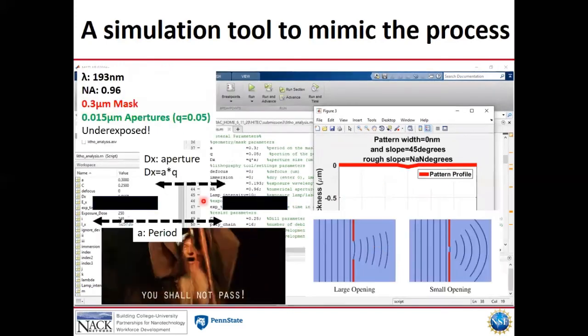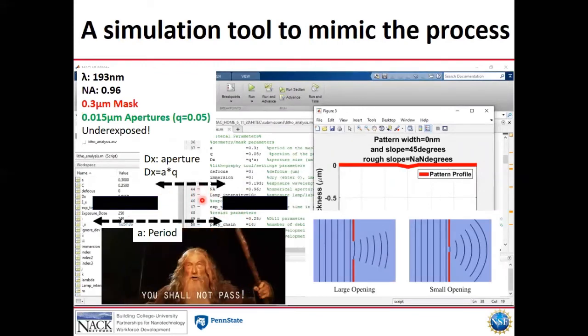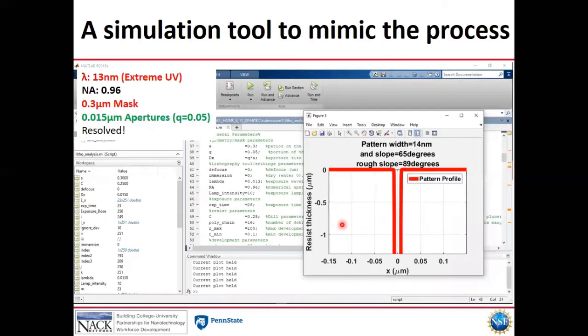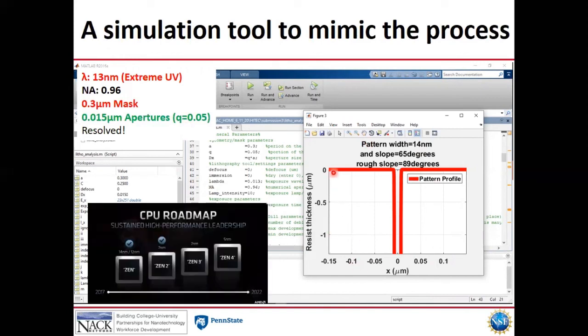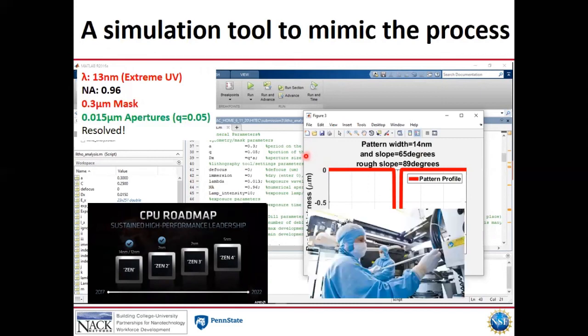What if we keep the periodicity still 300 nanometers but shrink down the aperture only to 150 nanometers? We have underexposure as little amount of light passes through. Remedy: simple again, switch to the most recent extreme UV 13 nanometer exposure, we resolve back. A lot of the tools are going to be created with this new technology in near future and it's currently installed by Intel to mass-produce 5 nanometer and smaller transistors.